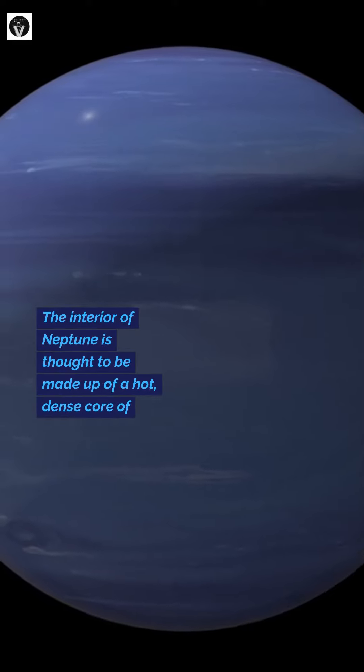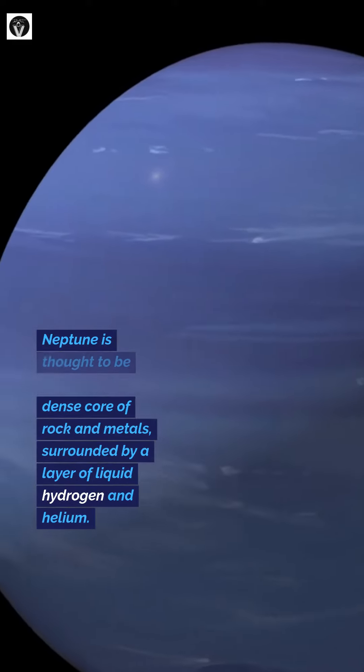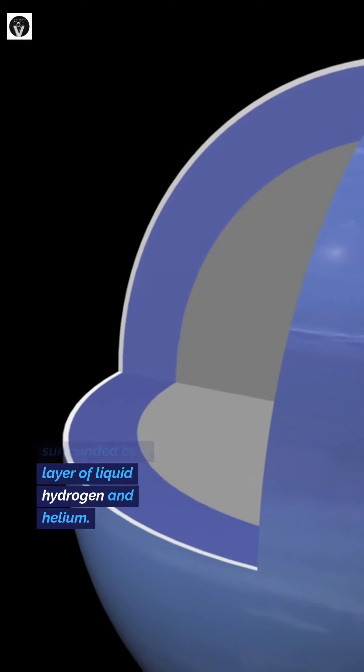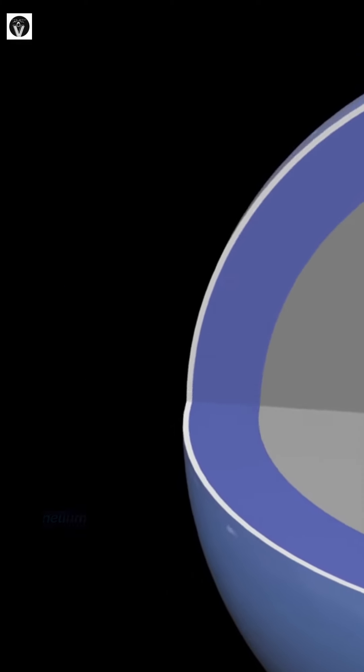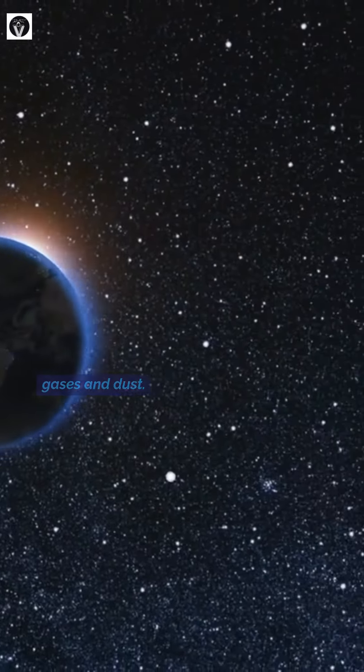The interior of Neptune is thought to be made up of a hot, dense core of rock and metals, surrounded by a layer of liquid hydrogen and helium. The outer atmosphere is made up of gases and dust.